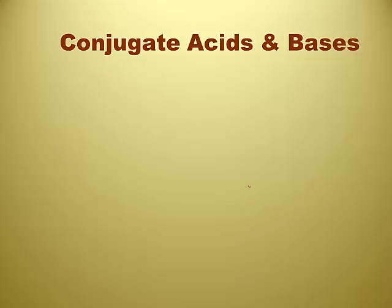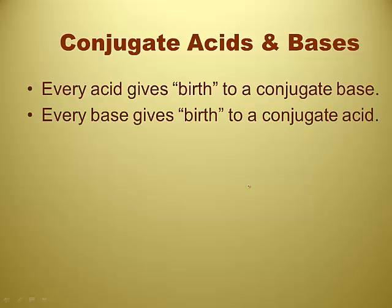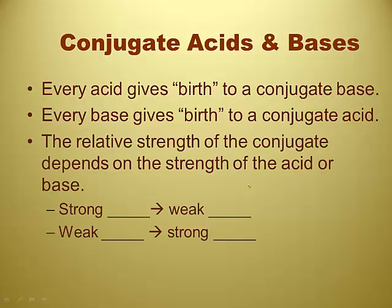So conjugate acids. Every acid gives birth to a conjugate base. When an acid reacts with water, it dissociates and it forms a conjugate base. Every base gives birth to a conjugate acid — you give birth to something opposite to what you are. The relative strength of a conjugate depends on the strength of the acid or base — it's actually exactly the opposite. So if you had a strong acid, it gives birth to a weak conjugate base. A strong acid is going to give birth to a weak conjugate base.